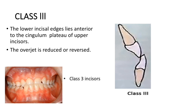In Class 3 incisor relationship, the lower incisor edges lie anterior to the cingulum plateau of the upper incisors. The overjet is reduced or reversed. In the clinical picture shown, you can see the lower incisors with a reversed overjet, and on the right side picture, the incisal edge of the lower incisor is anterior to the cingulum plateau of the upper incisors.